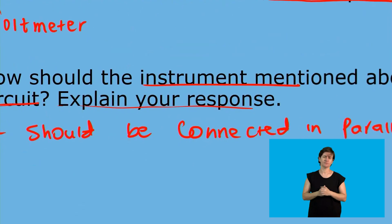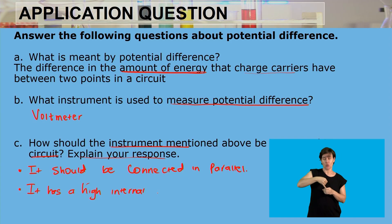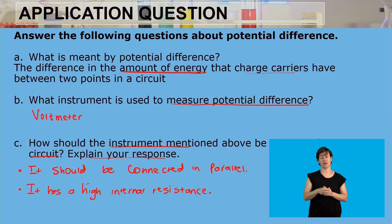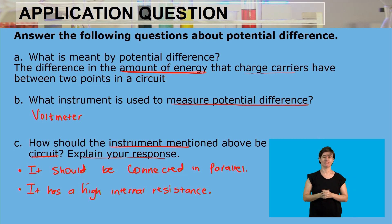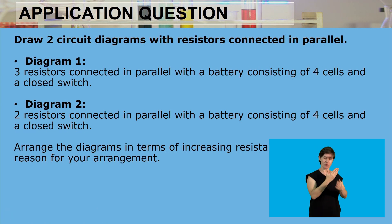The voltmeter should be connected in parallel because it has high internal resistance. If the voltmeter were connected in series, we'd be increasing the resistance of the circuit. But if it's connected in parallel, as we add more resistors in parallel, we are actually decreasing the resistance. So connecting the voltmeter in parallel decreases its effective contribution to circuit resistance.